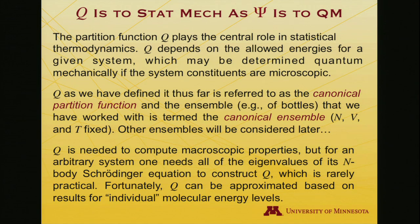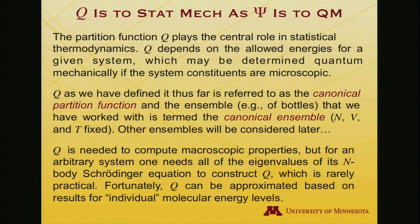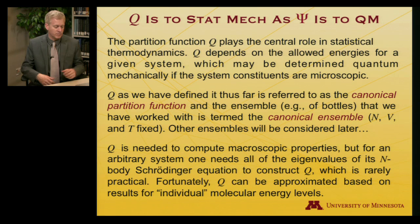So Q is needed to compute these macroscopic properties. We've played around with it a bit when we've been handed certain ensemble partition functions. But, for an arbitrary system, what you need in order to have all the relevant energy levels is all of the eigenvalues, that is all of the solutions, to its n-body Schrodinger equation, where n is the number of particles, which is presumably a very, very large number. So that is rarely practical to compute, where rarely practical means essentially never. It's just about impossible.